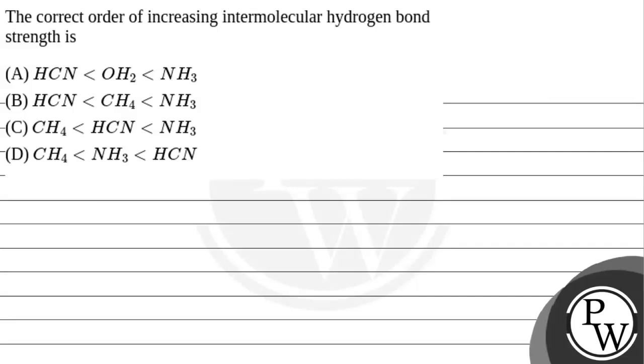Let's read the question. The question says the correct order of increasing intermolecular hydrogen bond strength is: option A: HCN less than OH2 less than NH3; option B: HCN less than CH4 less than NH3; option C: CH4 less than HCN less than NH3; option D: CH4 less than NH3 less than HCN.